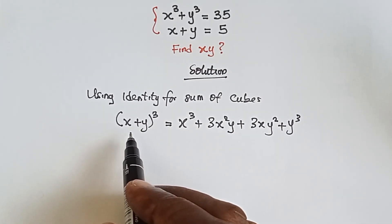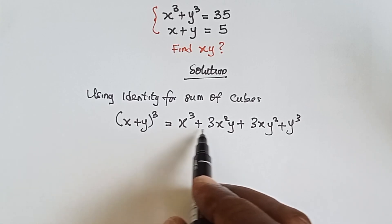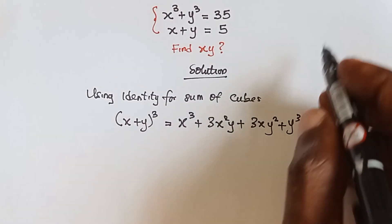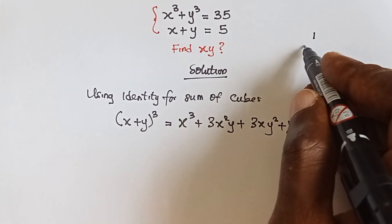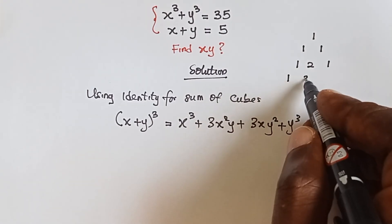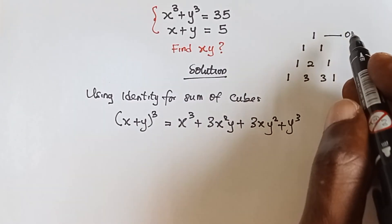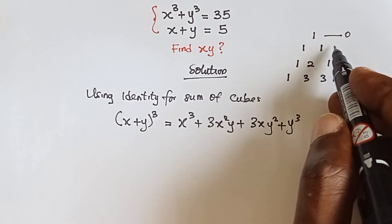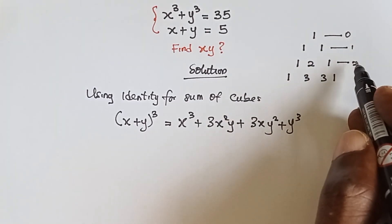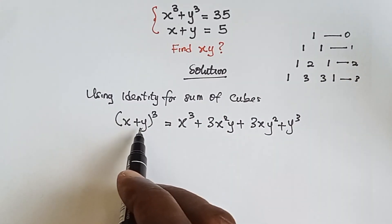We can also use Pascal's triangle to find the coefficients of all these terms. In Pascal's triangle we have: 1 | 1 1 | 1 2 1 | 1 3 3 1. This row is for power zero, then power one, power two, and power three respectively.